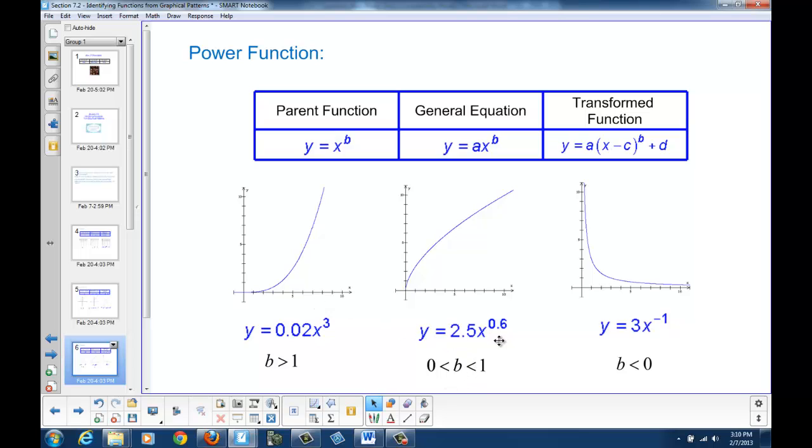If our b value, here it's 0.6, is between 0 and 1, then our graph still increases as x increases. But the shape of the graph is now concave down instead of concave up. And again, the graph still goes through the origin.